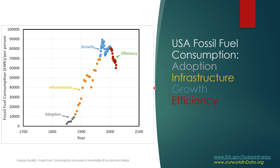We will see the same type of behavior, except over a condensed period, in the United States. The adoption period was very small because the United Kingdom was already using fossil fuel. But there is a period of infrastructure building which lasted almost 100 years, and the fossil fuel consumption per person increased very rapidly. Then from 1965 onwards, the fossil fuel consumption remained constant — that was the growth period. And then finally, there is an efficiency period where, because of introduced efficiencies, the consumption started decreasing.